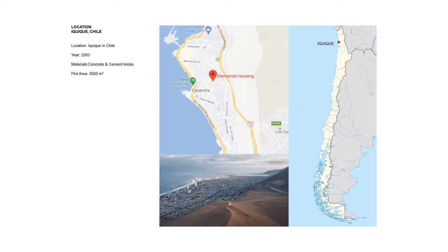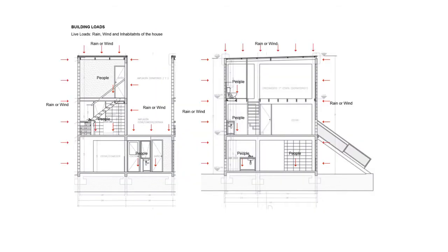Iquique is positioned on the north coast of the country. It has a radical coastal climate, as the city has a desert to the east with hot temperatures and dry air coming from inland. The building loads are live loads such as people, rain, and wind coming from either the sea or the desert side.